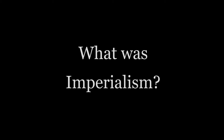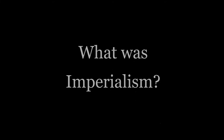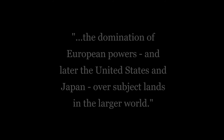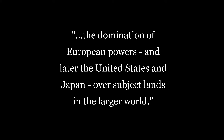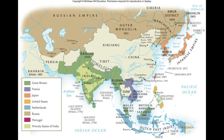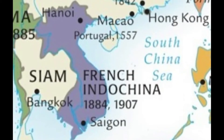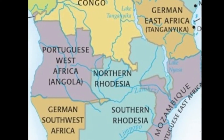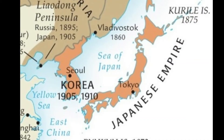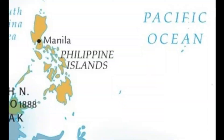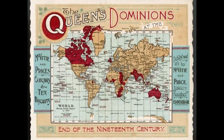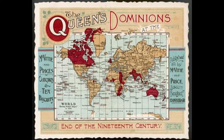The story of the Mahdi uprising is but one of many similar narratives that make up the age of imperialism. Traditions and Encounters describes imperialism as the domination of European powers — and later the United States and Japan — over subject lands in the larger world. This occurred from roughly the mid-19th century to World War II, across Asia, Africa, and the Pacific Rim. The French controlled West Africa and Southeast Asia; Germany held colonies in Africa and the Pacific; the Dutch controlled what is now Indonesia; Japan extended into Taiwan and Korea; the United States into the Philippines; and the largest empire of all was the British Empire, upon which the sun was said to never set.